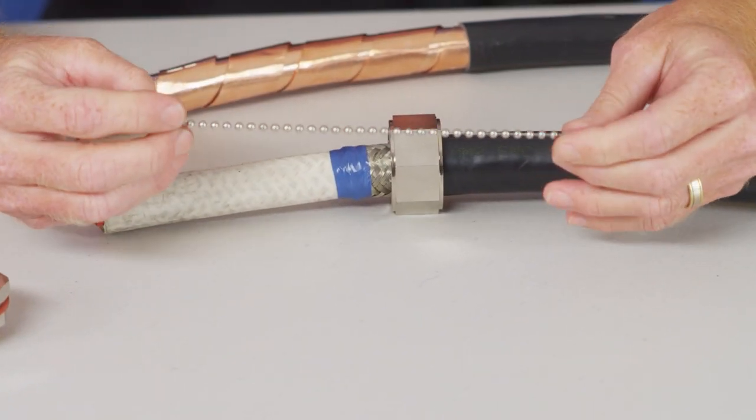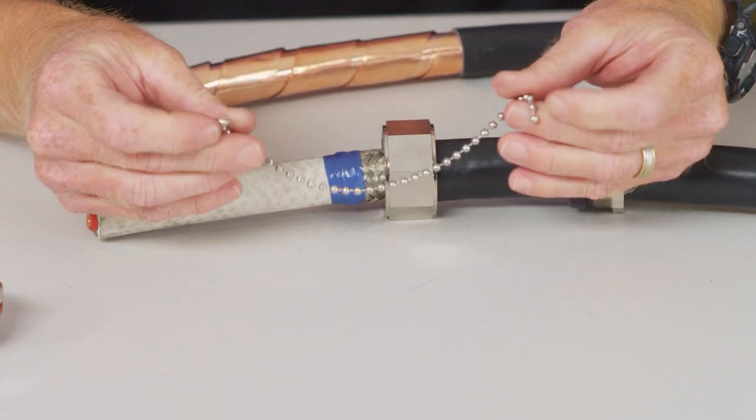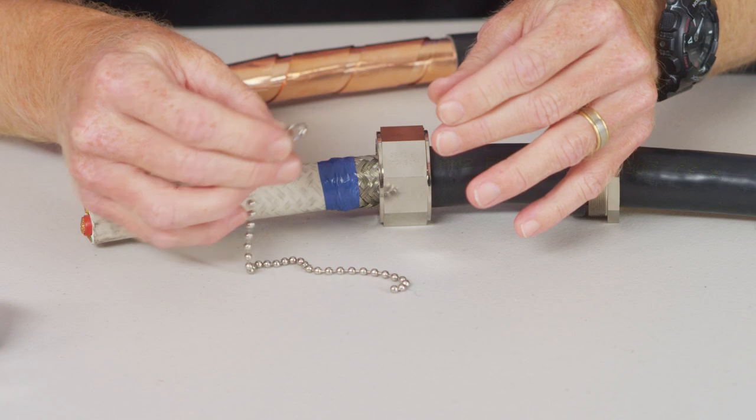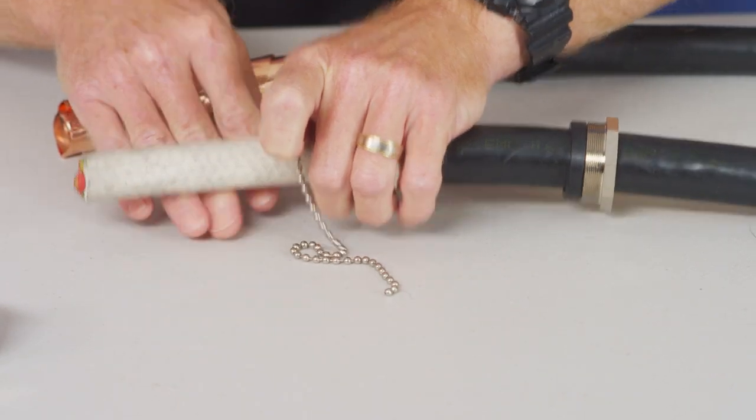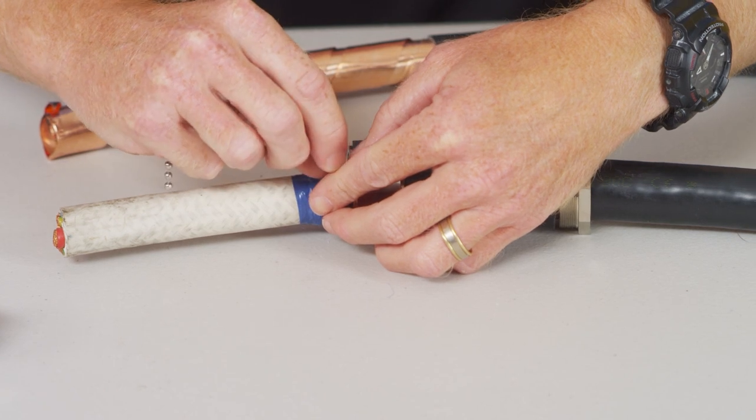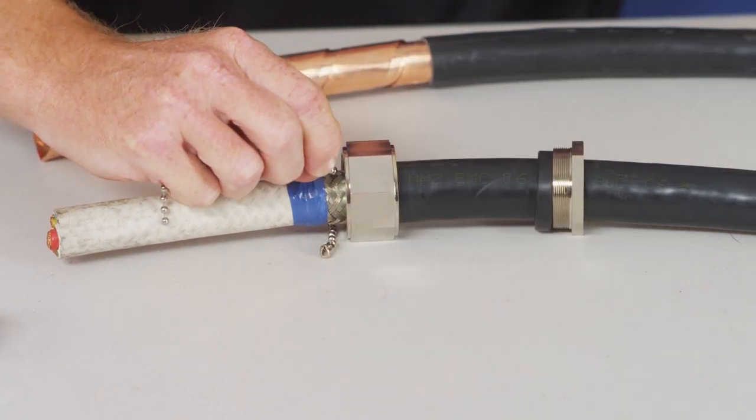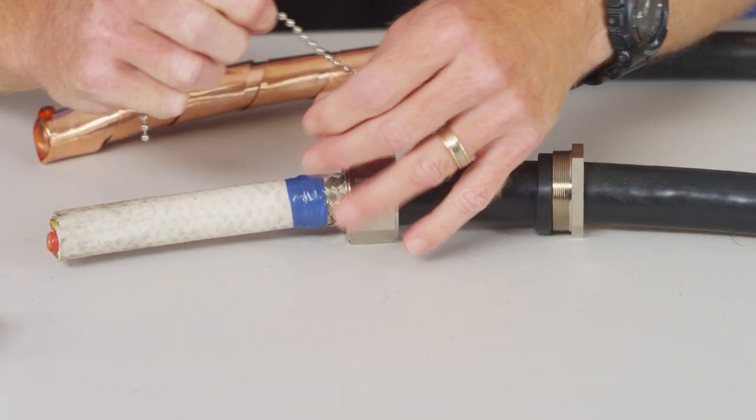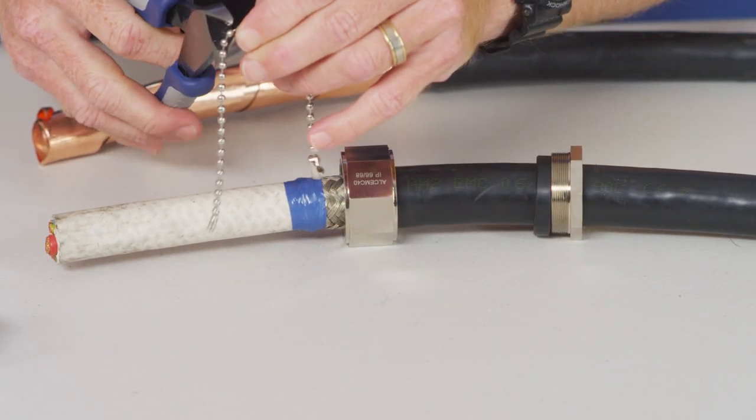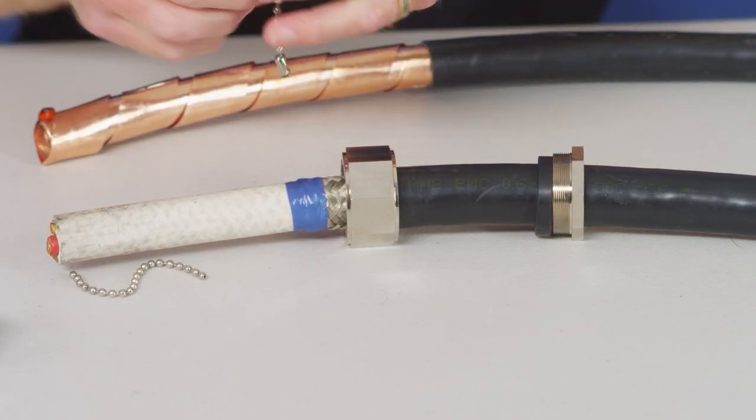Now this is the bead. It comes as one length and you have to cut it off to the correct length. So what we do, we wrap that around the braid and we determine the length. Okay, so we get a rough estimate there. It goes one bead longer so we're not going to cut it short and then we have to apply.